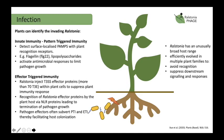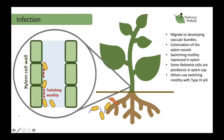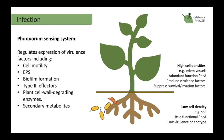Once they've infected the root, Ralstonia migrates to the xylem vessels by repressing flagella motility and switching to twitching motility. Bacterial wilt virulence is highly dependent on expression of virulence factors including this motility switch, production of exopolysaccharides, and type 3 secretion effectors.